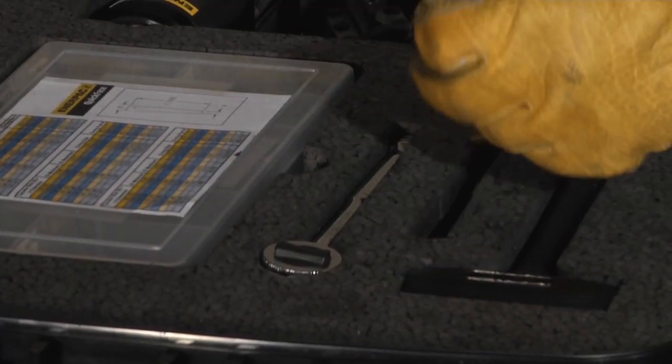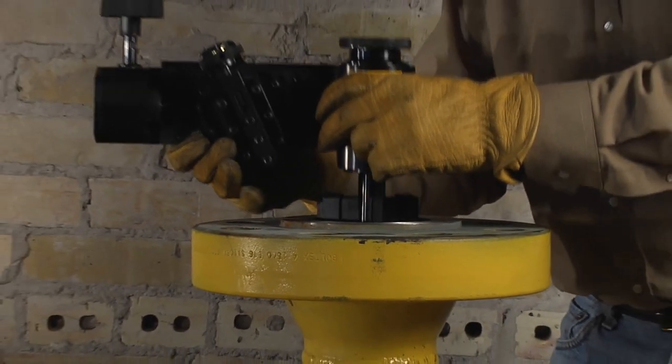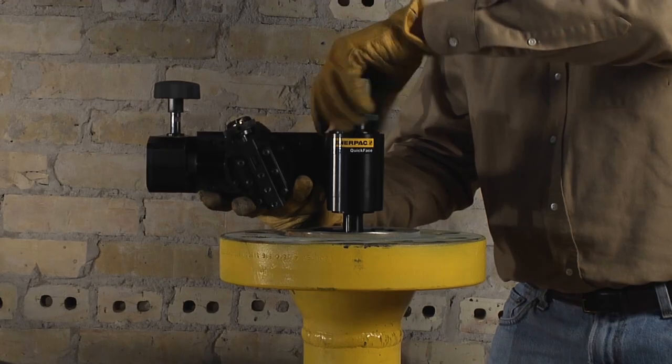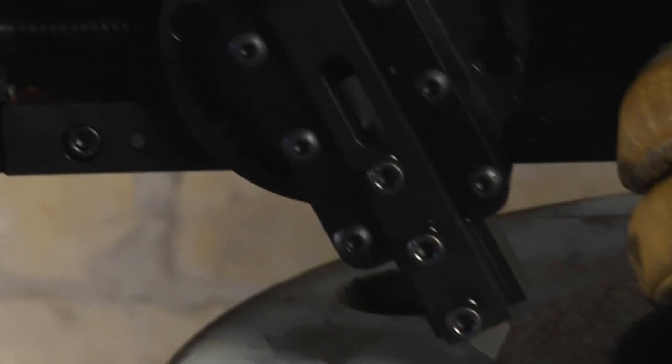After selecting the correct lead screw for operation, the tool body is inserted in the pipe end, centering itself with adjustable locators. The tool can be adjusted with a calibrated slide to define cut depth and the correct finish.